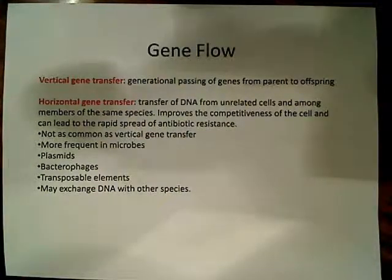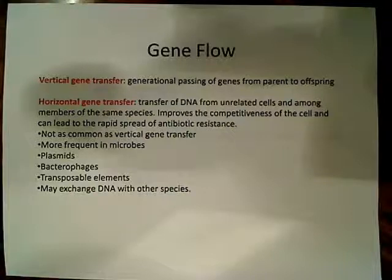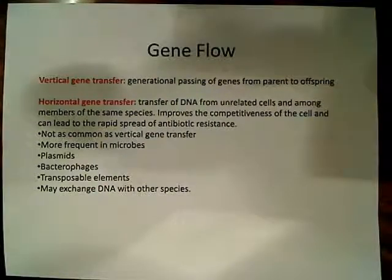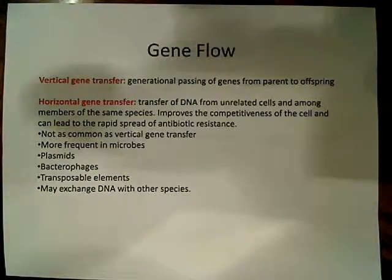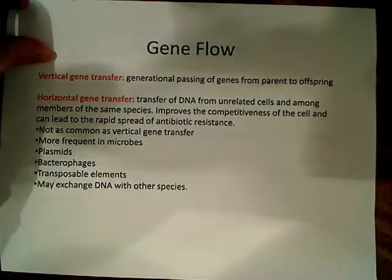Bacteria and microbes are able to transfer genes not only vertically through generational passing — you can go through binary fission and create an identical cell — but you can also take up DNA from the environment, from other cells, and that can be incorporated into the genome as well. This improves the competitiveness of the cell and can lead to the rapid spread of antibiotic resistance, even among members of different species. It's more frequent in microbes and involves plasmids in some cases, bacteriophages — viruses that infect bacterial cells — in other cases, and transposable elements. The key point is that cells can exchange DNA with other species, not just members of the same species.